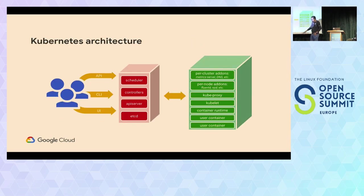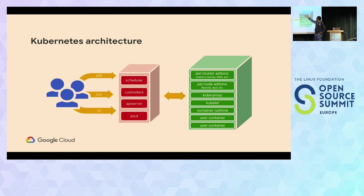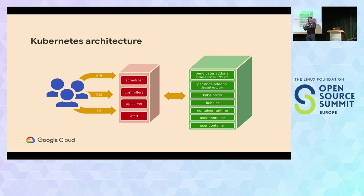So, a very high-level architecture of Kubernetes — it's important to understand this for the remainder of the presentation. You as a developer or user use an API, command line, GUI, or a combination of all three. You talk to what we call a control plane — either one, three, or five nodes depending on how you want to run it. Inside there are a bunch of components. The main ones are: the API server, which receives your commands via kubectl or GUI; etcd, a distributed key-value store where YAML files are stored; controllers that monitor etcd through the API server and act when something needs to happen; and the scheduler, which finds a node to run your workload.